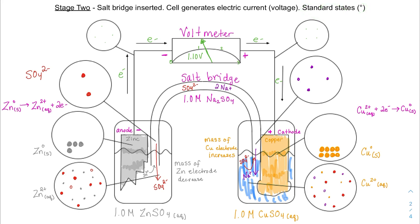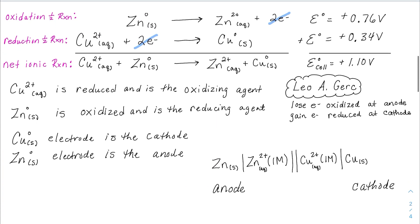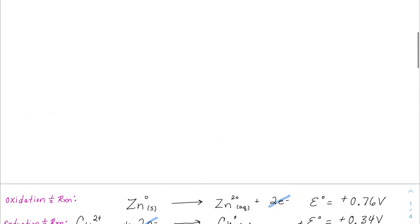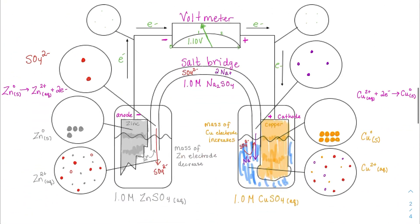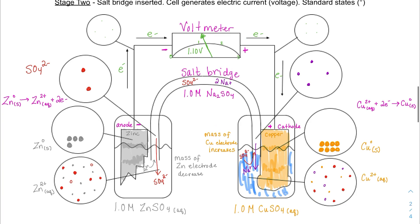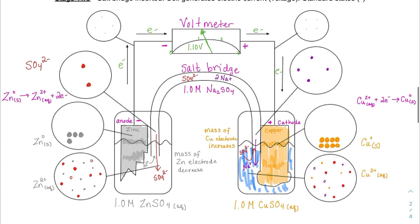In the next video, I'll talk about what happens when we're no longer at standard states — maybe we're not at one molar anymore because the cell has been running and the voltage starts to change. In the fourth video, it reaches equilibrium, which is what we call a dead battery. You could also label the half cells as the oxidation half and the reduction half. Hopefully in the next video we'll cover the delta G equation, and in the last video, the Nernst equation. Good luck, chemists!